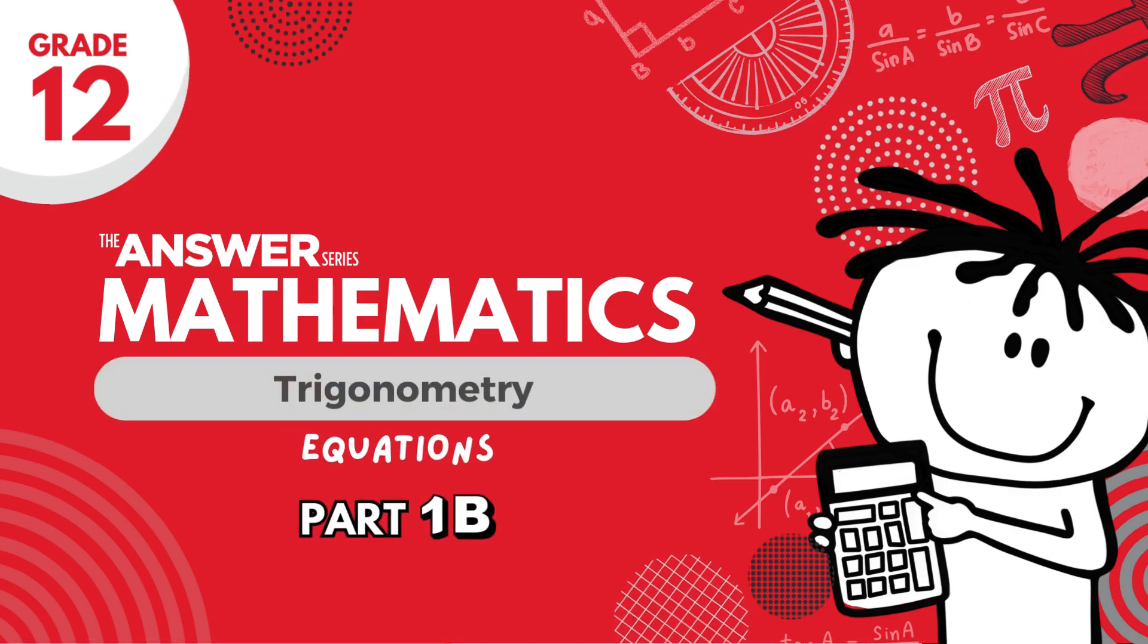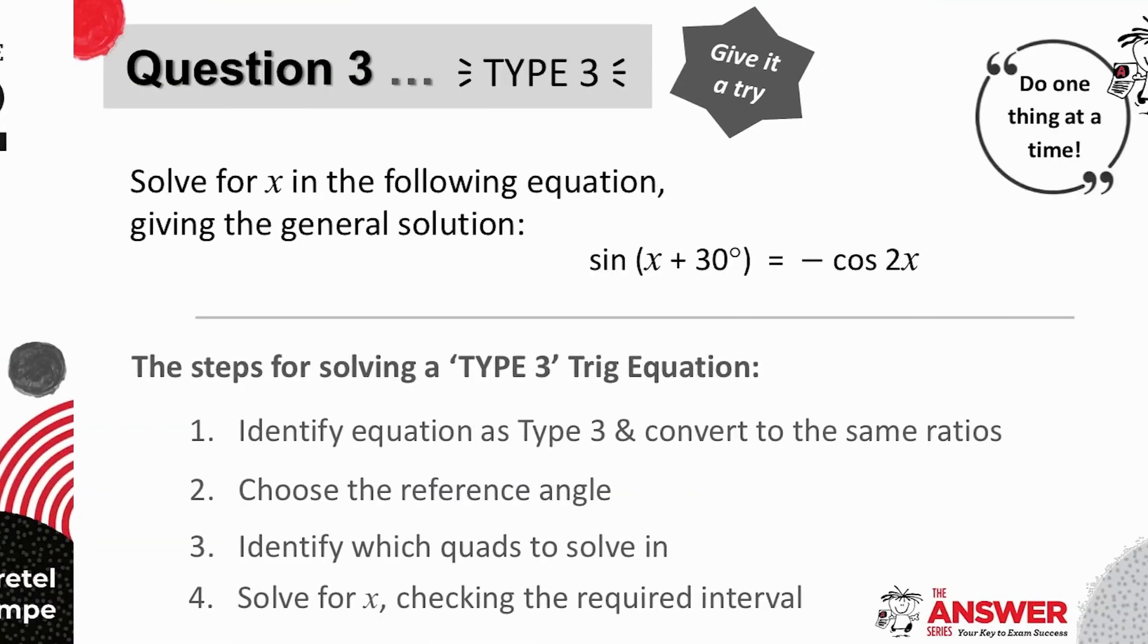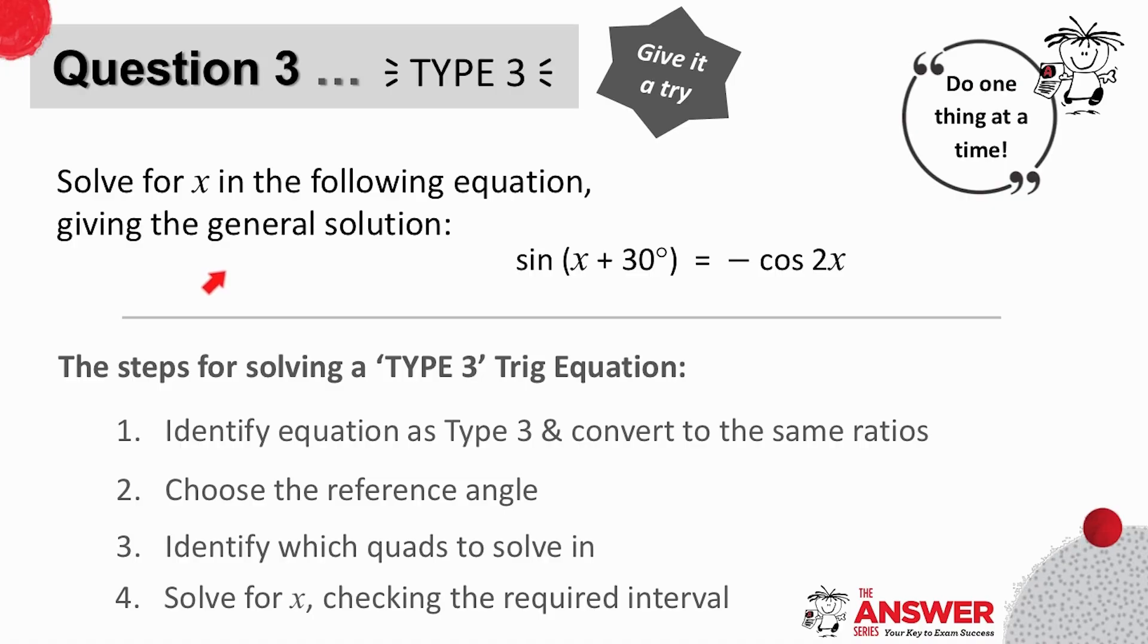Welcome to this second trig video on part one of equations. We'll go straight into our third example. You'll see here that these are co-ratios, so this is an example of type three.